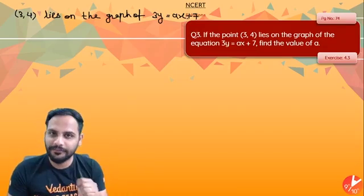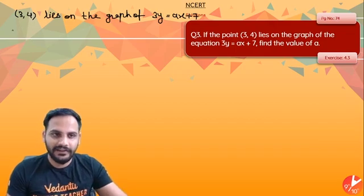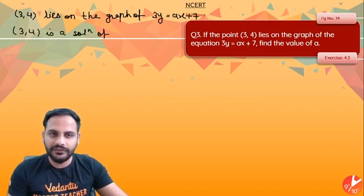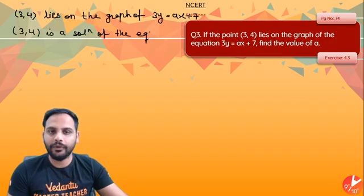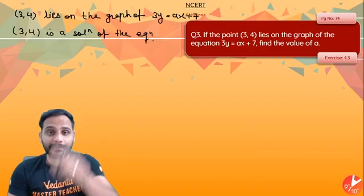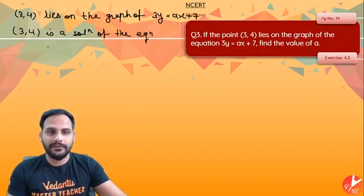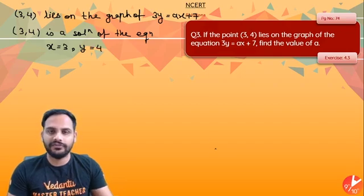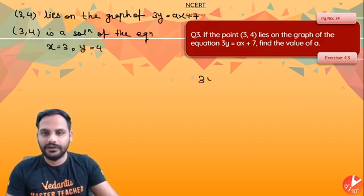We know all the points which are present on the line, they represent a solution. So that means I can say this 3 comma 4 is a solution of the equation. Definitely if a point is lying on the graph, it must be a solution of that equation. That means if I put x equal to 3 and y equal to 4 in this equation, it should satisfy.